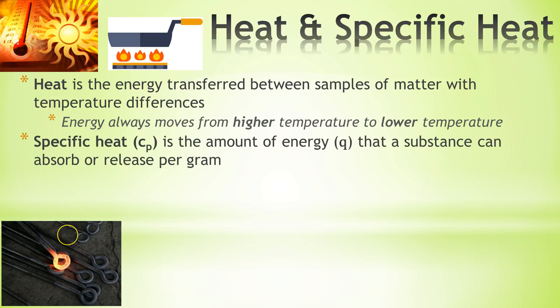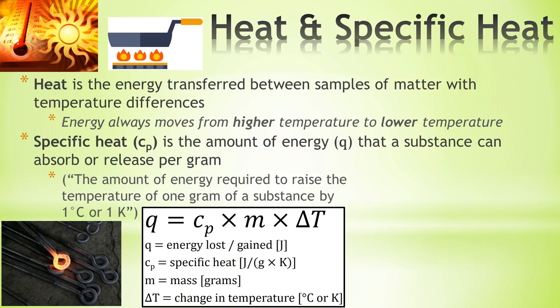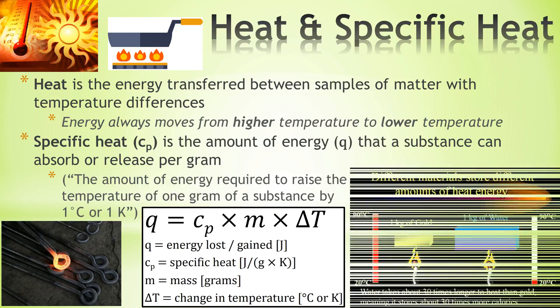Specific heat C sub P is the amount of energy Q that a substance can absorb or release per gram. The equation we need to know is: Q equals C sub P times M times delta T. So the energy equals the specific heat — unique for every substance — times the mass of that substance times the change in temperature. With this we can figure out how much something is going to change in temperature if we know how much energy has been put into it. Specific heat is the amount of energy required to raise the temperature of one gram of substance by one degree Celsius or one Kelvin.